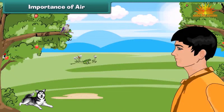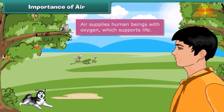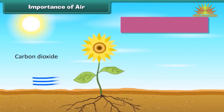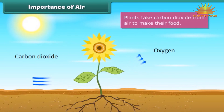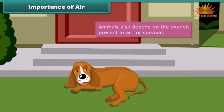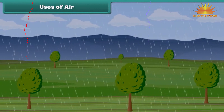Air has weight. Take an inflated balloon and weigh it. Now remove the air and deflate the balloon and weigh it once more. The balloon had more weight when it was inflated. This proves that air has weight.